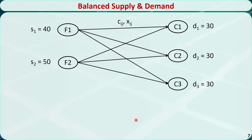We can show the mathematical formulation in a diagram. These are the supply nodes, these are the demand nodes, and these lines with arrows represent the transportation routes. There is a cost Cij associated with each route. We need to determine the amount of products Xij that will be shipped from supply node i to demand node j. For this balanced problem, the total supply is 90 and the total demand is also 90.